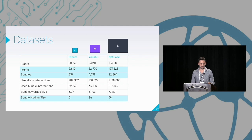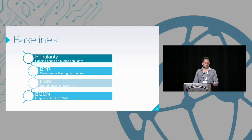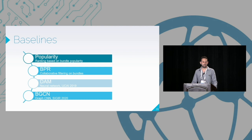For experimental settings, we use the same train-validation-test split as the state of the art, using the same datasets with the same separation. We extend the accuracy metrics from previous studies, using recall, NDCG, MAP, and MRR. For baselines, we use popularity, BPR, DAM — which applies a weighted average of items for bundle recommendation with a deep neural network — and BGCN, a graph convolutional neural network utilizing connections between bundles, users, and items.